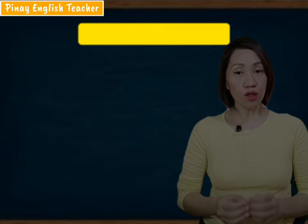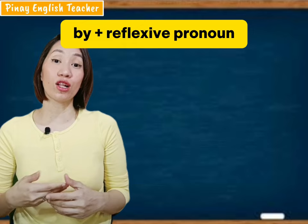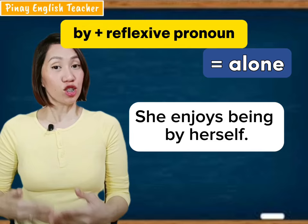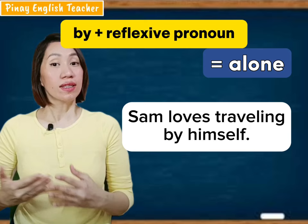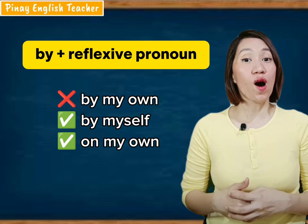Usually we follow the structure 'by' plus a reflexive pronoun — for example, 'by yourself,' 'by myself,' 'by themselves.' 'By' plus a reflexive pronoun means alone. For example, 'She enjoys being by herself' means she enjoys being alone. 'Sam loves traveling by himself' means Sam enjoys traveling alone. And we don't say 'by my own' — we say 'by myself' or 'on my own.' Pay attention to that, because it is one of the common mistakes of ESL learners.